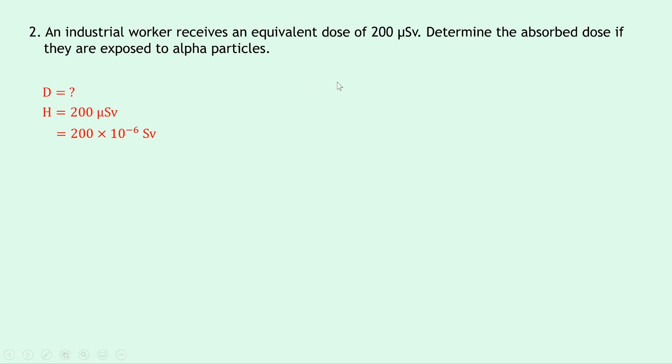So again, just like in question one, we need to look at the data sheet and we should find that the radiation weighting factor for alpha particles is 20.